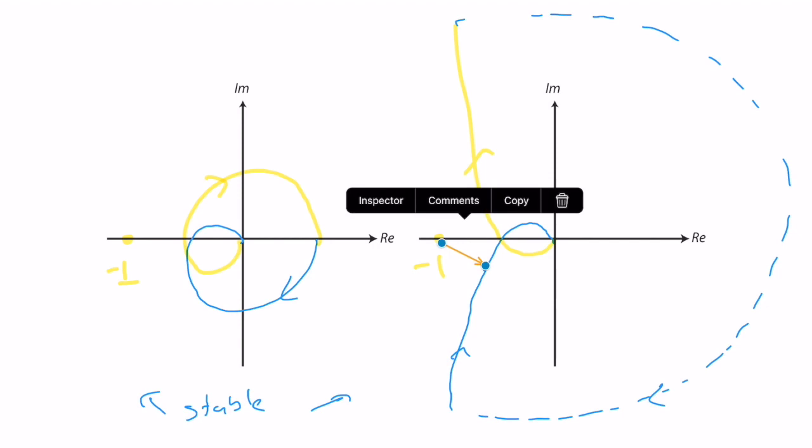Instead, we use two different metrics which approximate this distance — gain margin and phase margin.